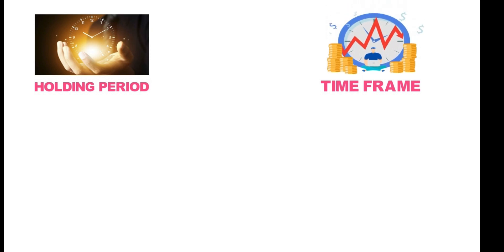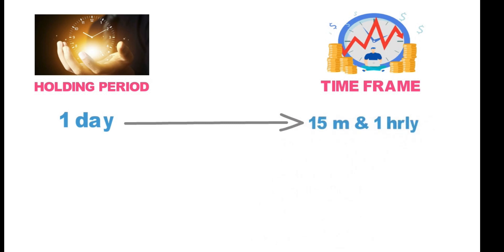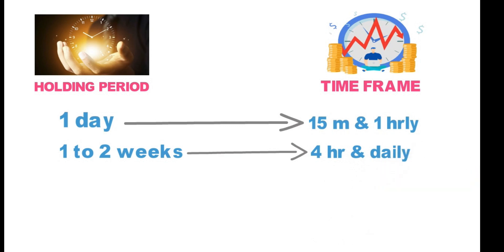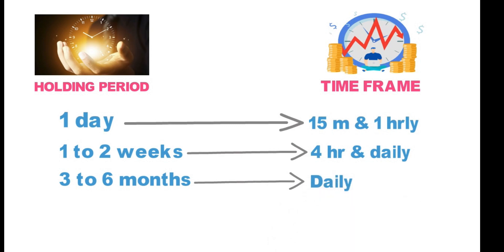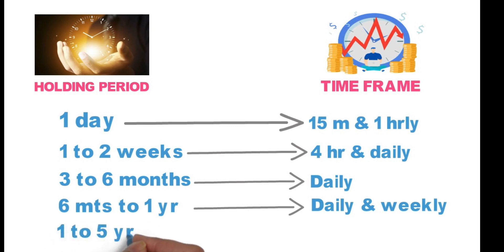Many have one big question: in which time frame should we check volume — one minute, hourly, daily, weekly, or monthly? This time frame rule applies to every oscillator, whether RSI, MACD, Bollinger Bands, or volume. Always remember: the time frame depends on how long you need to participate in the trend. If your holding period is one day — intraday — check the 15-minute and one-hour chart. For one to two weeks, check four-hour and daily volume. For three to six months, check daily volume. For six months to one year, check daily and weekly volume. For one to five years, check weekly and monthly volume.